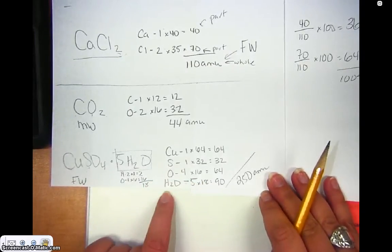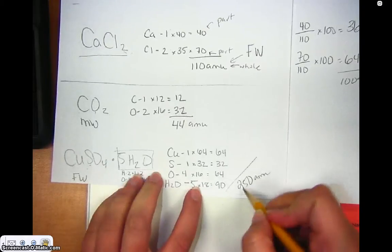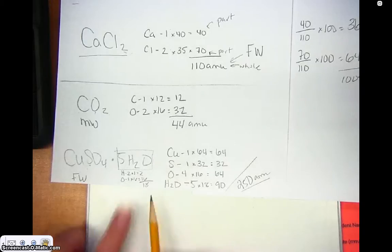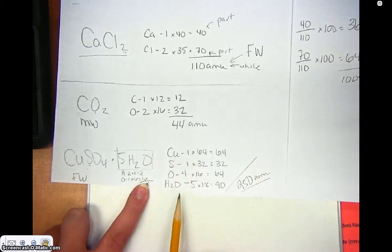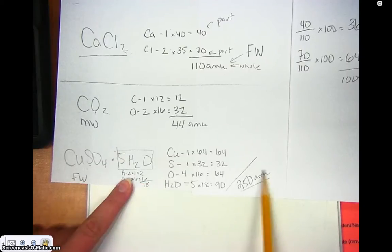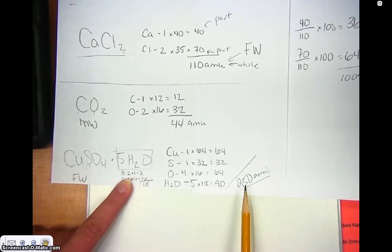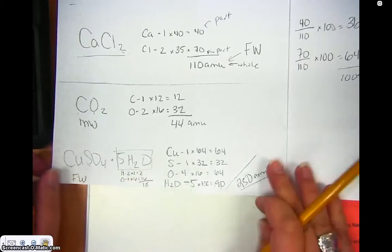And in this last problem here, I calculated the overall formula weight of this to be 250 atomic mass units. And I told you to kind of keep the water like it was one thing, because quite often you would be asked, what is the percent water in this compound? So, in order to do that, that would be very easy. I already have my total added up here. I have my water kept separately.